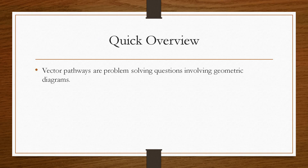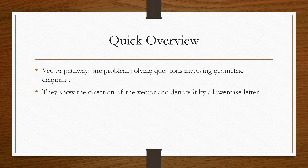So we'll take a quick overview. Vector pathways are problem-solving questions that involve geometric diagrams. They also show the direction of a vector and denote it by a lowercase letter. A vector has a magnitude — how big the vector is — but it also has a direction: where does it start and where does it end, or at least where does it start and which way is it pointing. So the vector pathway exploits the direction.